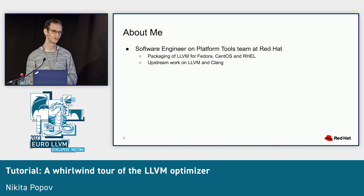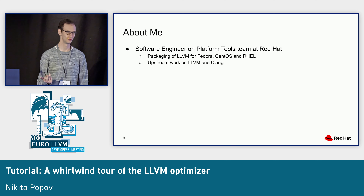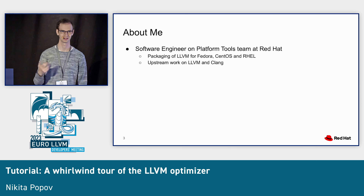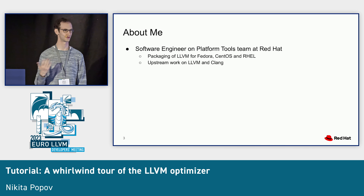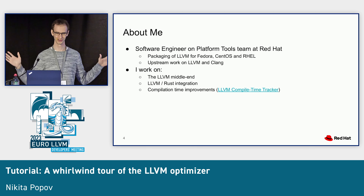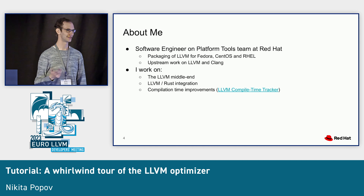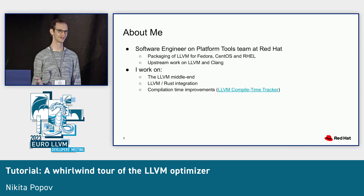A brief few words about myself. I work at Red Hat and our sub-team is responsible for shipping LLVM for the Fedora, CentOS, and RHEL operating systems. In the remaining time, we do upstream work on LLVM and related projects like Clang, infrastructure, and release management. I personally work on the middle end. I'm open to working on everything that's not related to vectorization. I also work on integration with Rust and Rust-specific optimizations, and I always try to improve compile time — making the compiler faster. To that purpose I also have a compile time tracker to make sure there are no unexpected regressions.